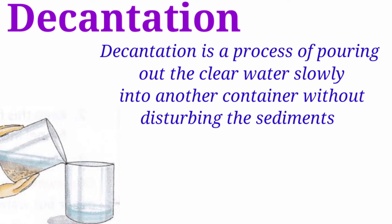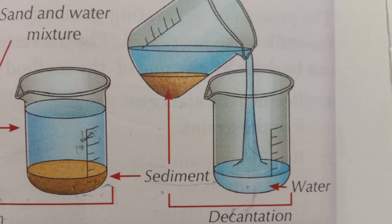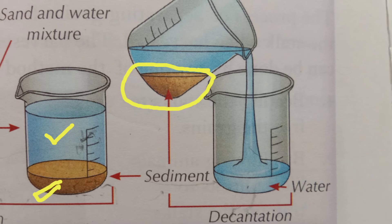After sedimentation, the next process is decantation. Decantation is a process of pouring out the clean water slowly into another container without disturbing the sediment. In the same sand-and-water example, once the sand has settled, we slowly pour out the clean water into another container. This process is known as decantation, and together they are called sedimentation and decantation, used to remove insoluble solids from liquids.